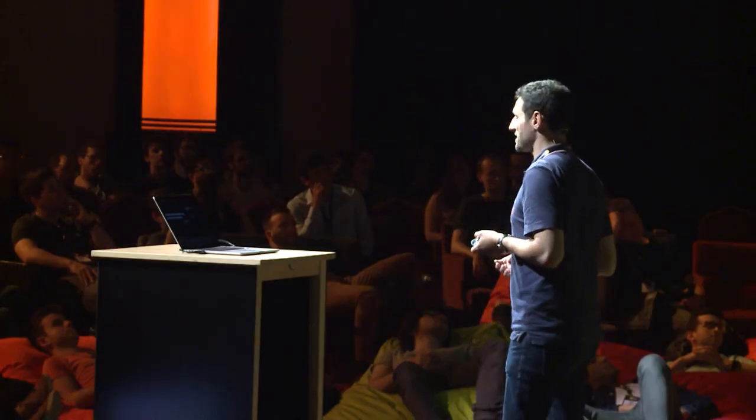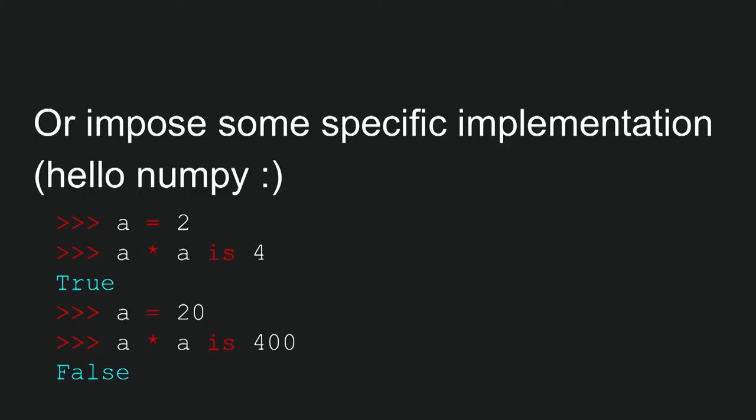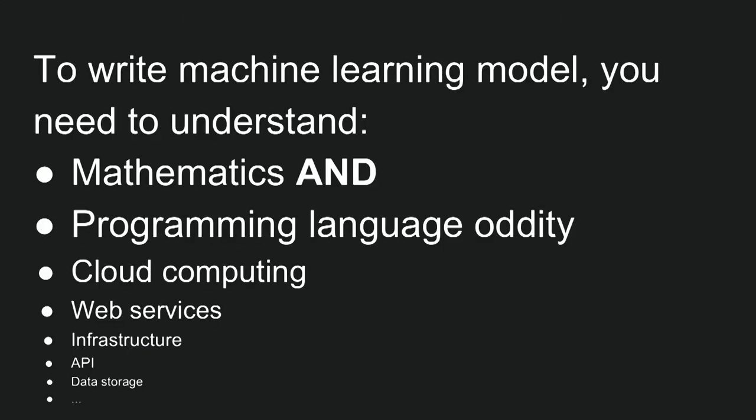But information without an algorithm is not software — it is just a sequence of bits. So what is software 2.0? How can we write software 2.0? Which language is suitable to describe software 2.0? In theory, whatever fancy programming language can be used, but some of their constraints may influence the way we think or impose specific implementations. To write machine learning nowadays, you need to understand mathematics, programming languages, cloud computing, web services, infrastructure, APIs, and data storage. No way.